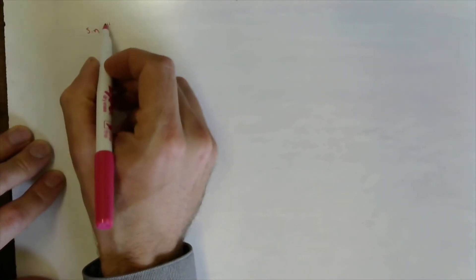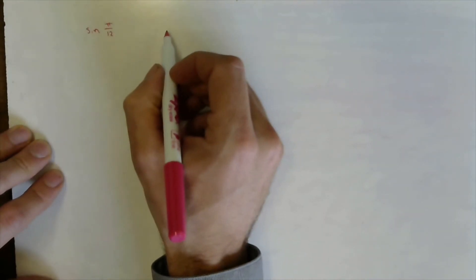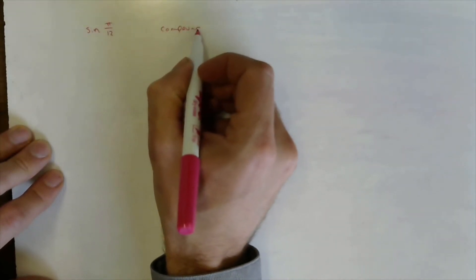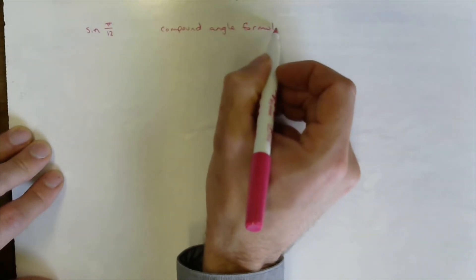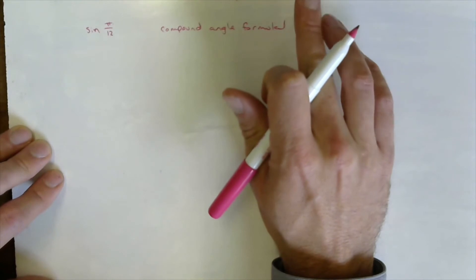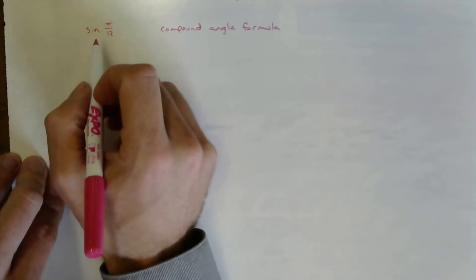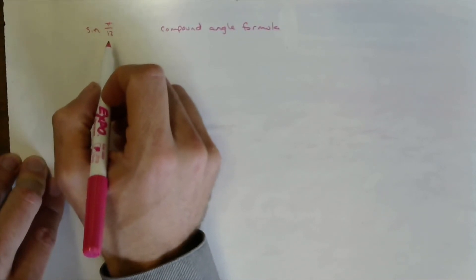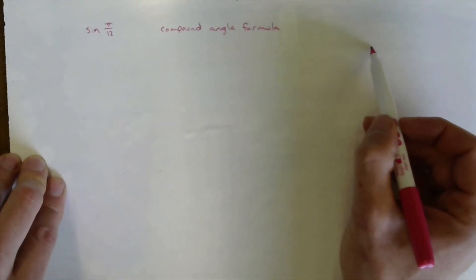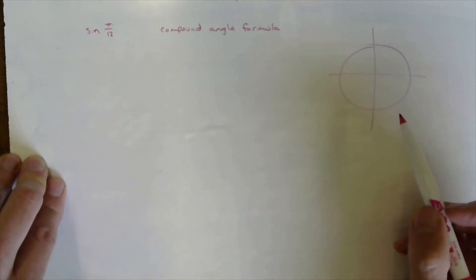In the last example, we are going to use an appropriate compound angle formula from our trigonometric formula sheet in order to determine an exact value for the sine of pi over 12. We want to express pi over 12 as the addition or subtraction of two angles, and the two angles we choose should be special angles on our unit circle.